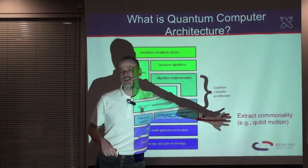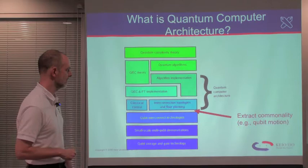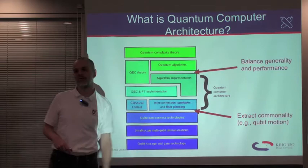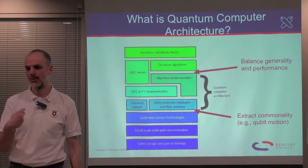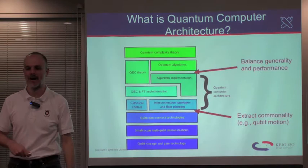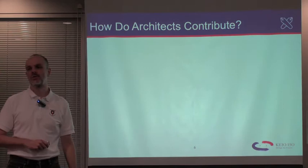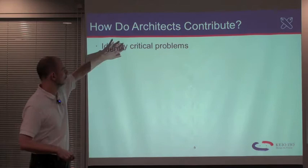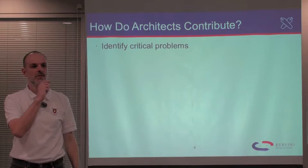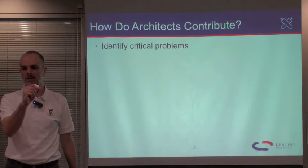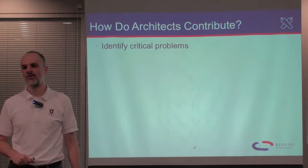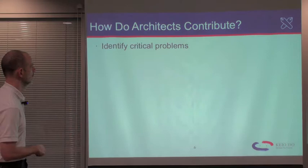At the bottom of what we call quantum computer architecture, our goal is to extract some commonality — to find basic principles for how to design systems on top of these technologies. At the top, our goal is to balance generality and performance. My background is in computer architecture. Architects help to identify the critical problems in the systems. The physicists have the understanding of the behavior of individual quanta, individual qubits, but their background is not in the construction of large systems, and there are a number of issues that arise as systems begin to scale up where architects can contribute.